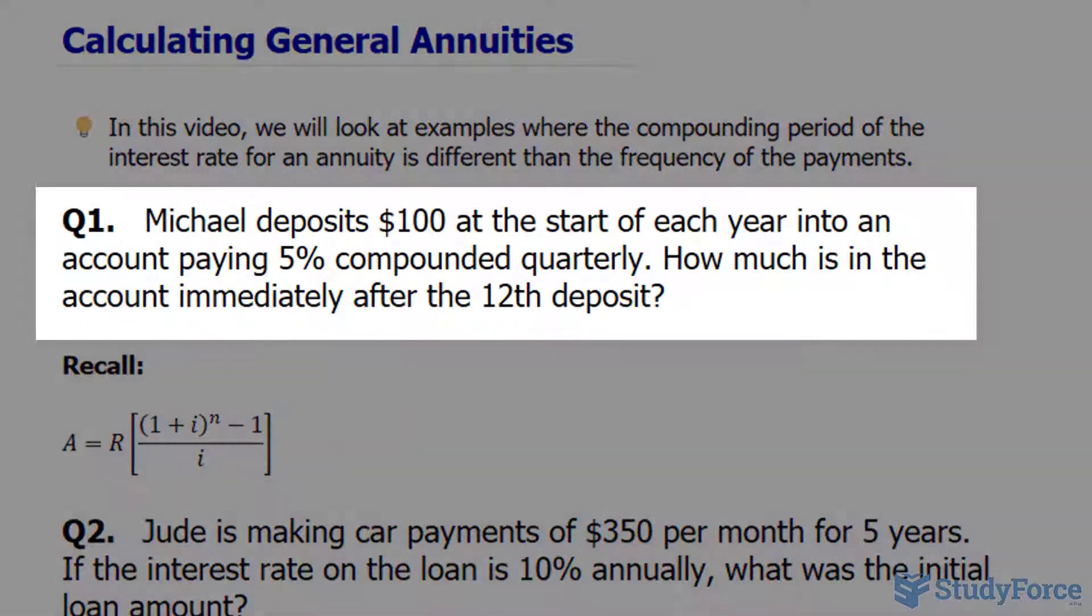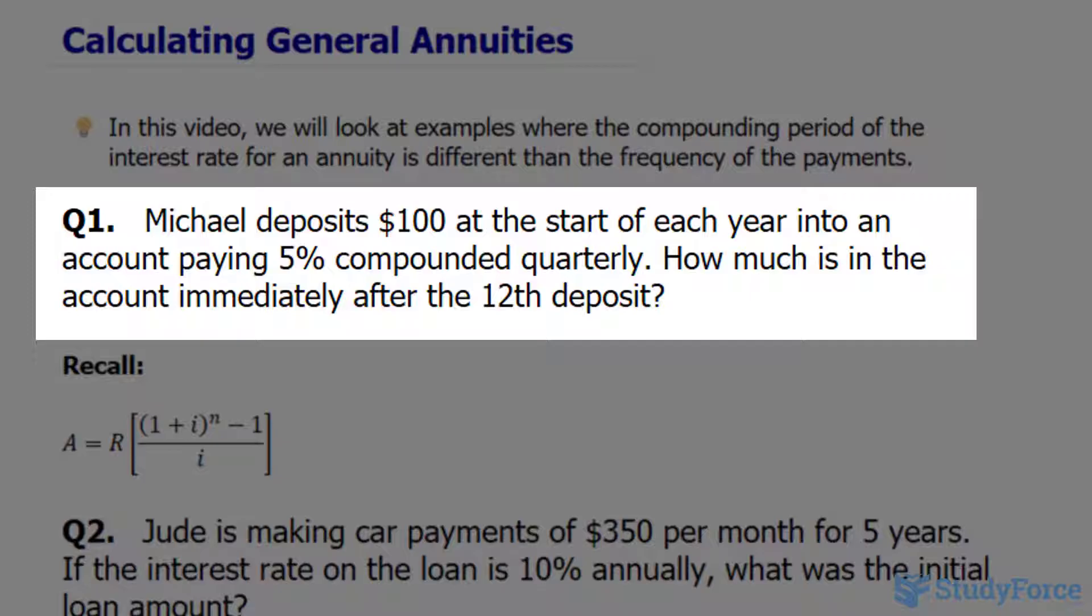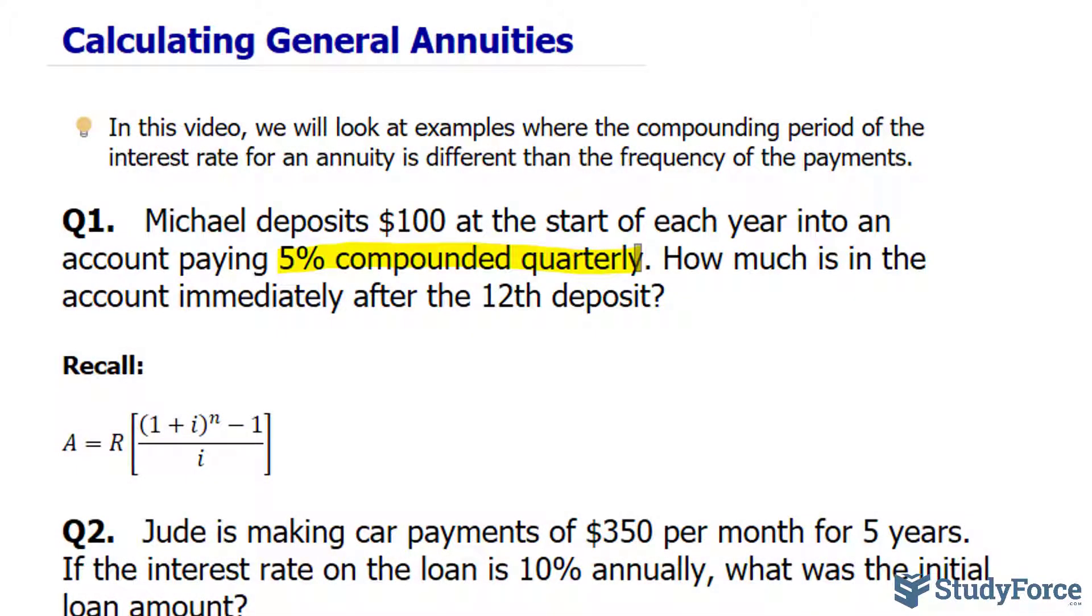The first question asks: Michael deposits $100 at the start of each year into an account paying 5% compounded quarterly. How much is in the account immediately after the 12th deposit? So $100 is being put into an account every year, and the interest rate is being compounded quarterly. We need to convert the nominal rate into a rate that is compounded annually.